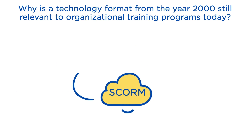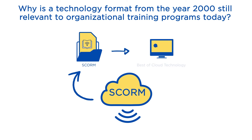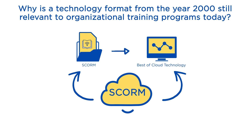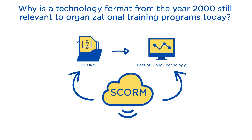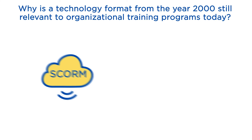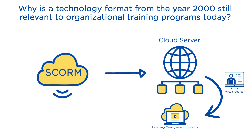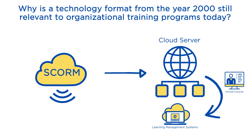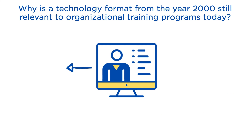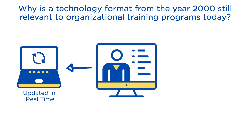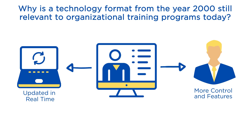SCORM Cloud marries the tried and tested SCORM format with the best of cloud technology to deliver more features and options than ever before. SCORM Cloud hosts course content on a cloud server that shares courses with online or locally hosted learning management systems through a SCORM package called a dispatch. This allows course content to be updated in real time, but also gives more control and features to the course author or provider.